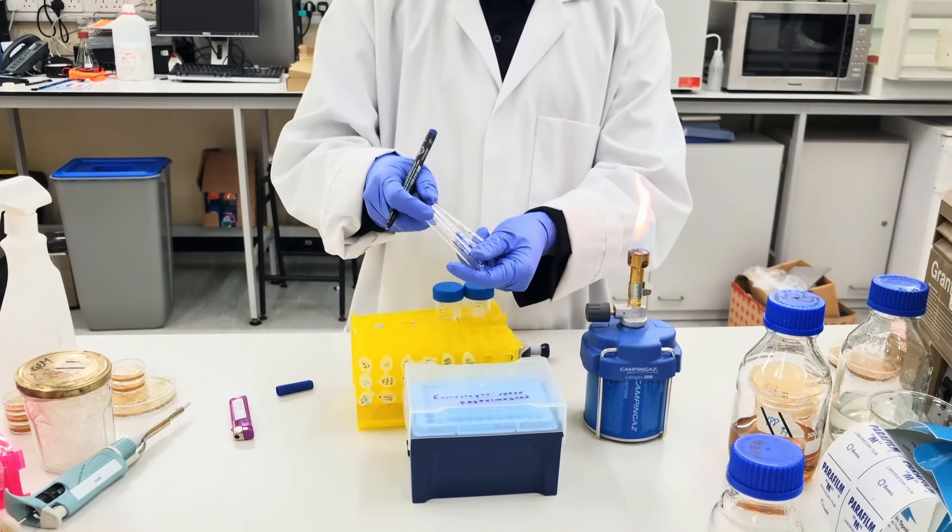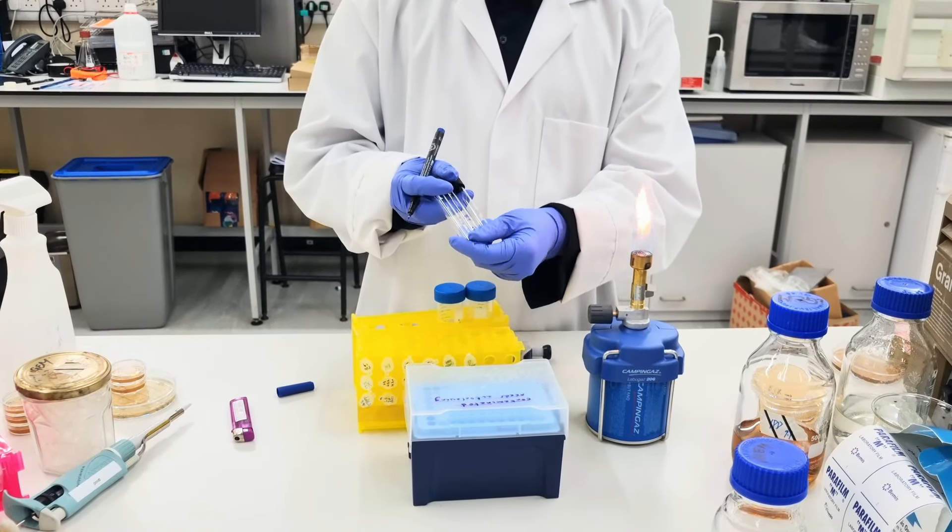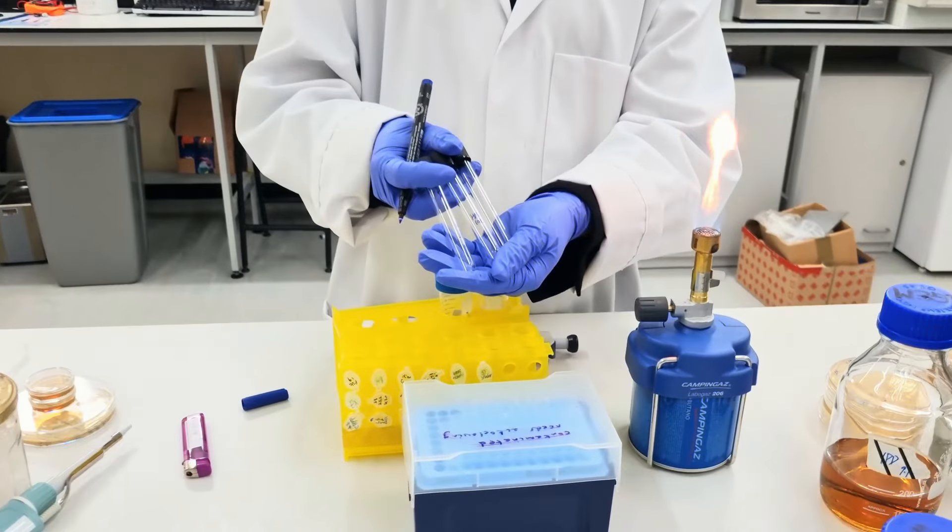So like this, label your tubes with the names of the strains you're going to inoculate and also the dates you're going to do this.